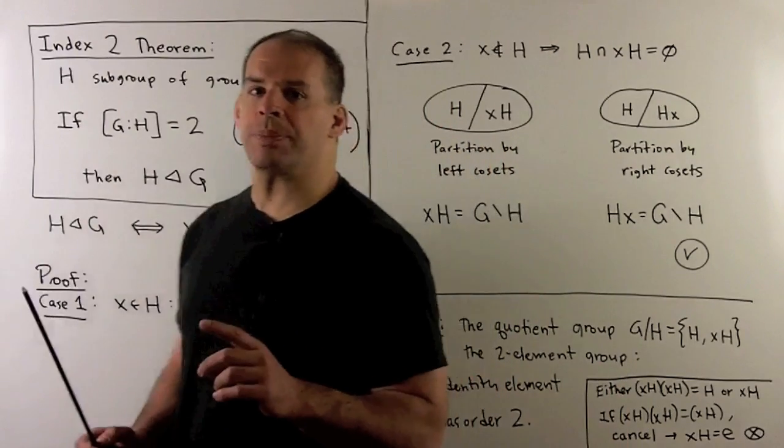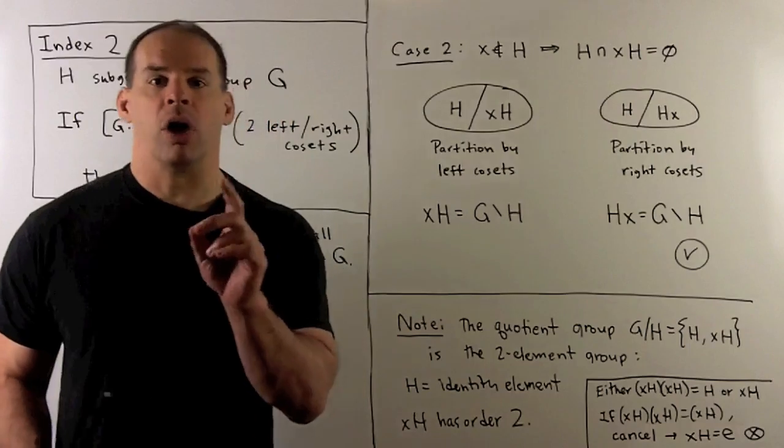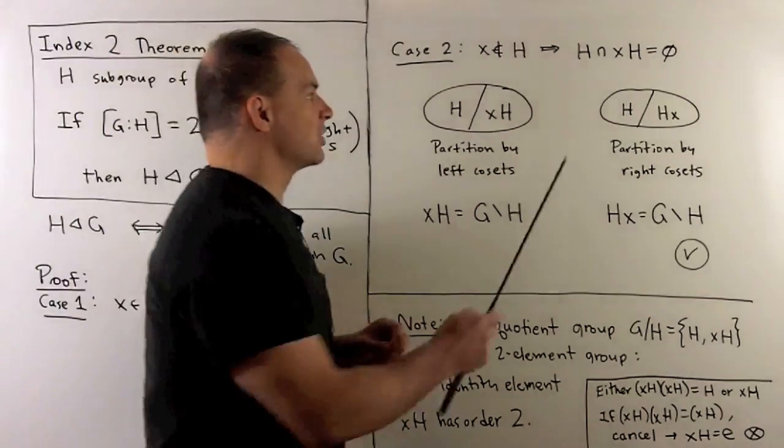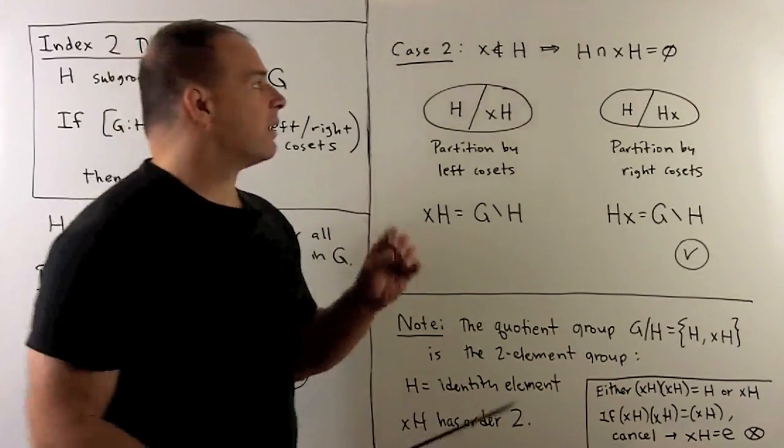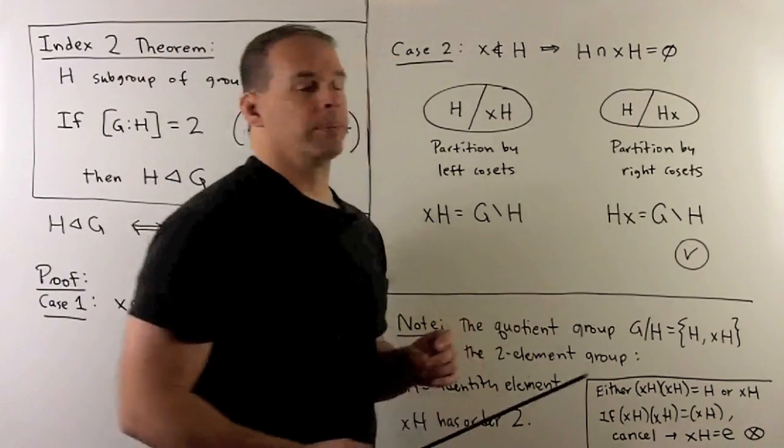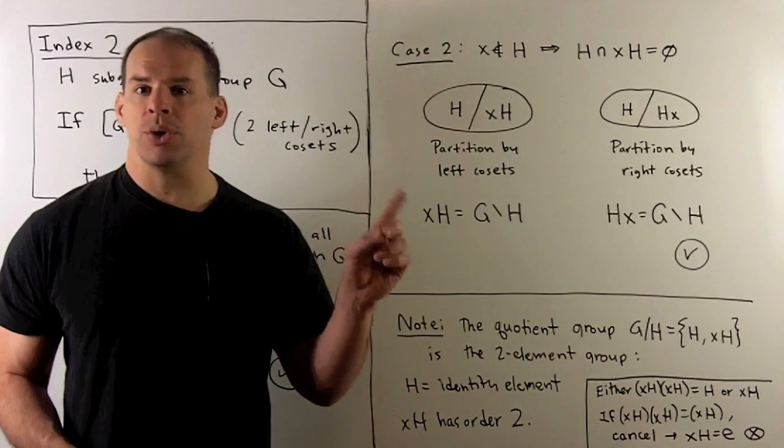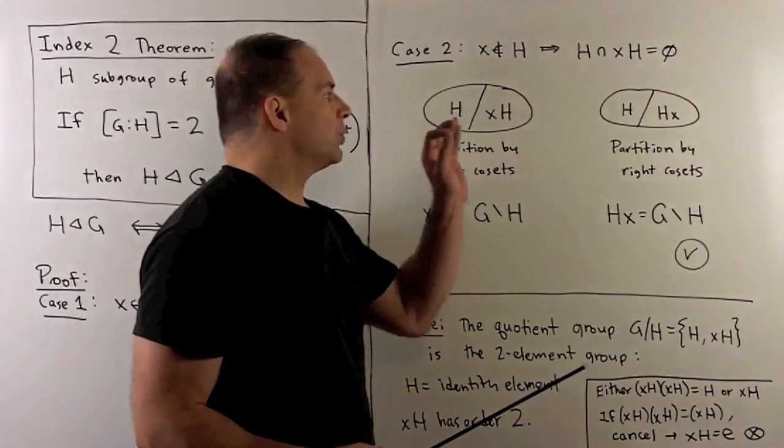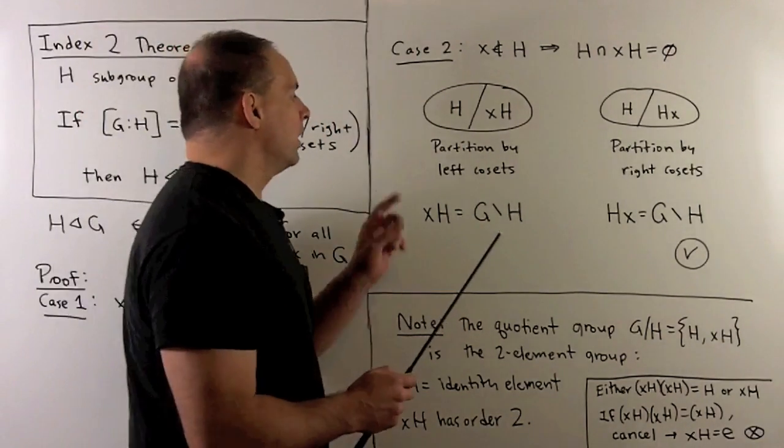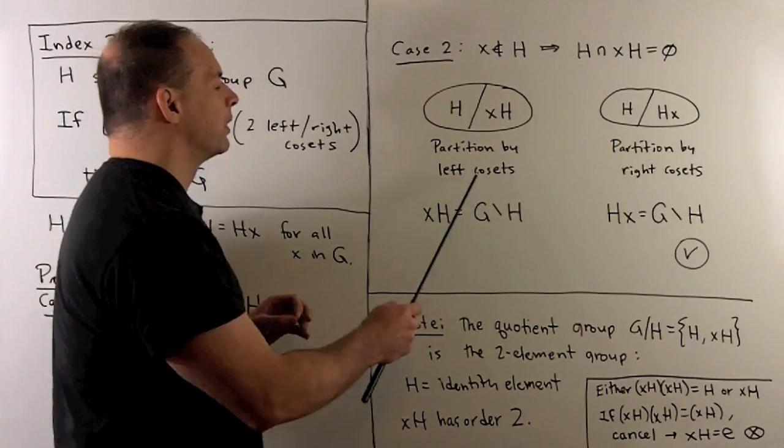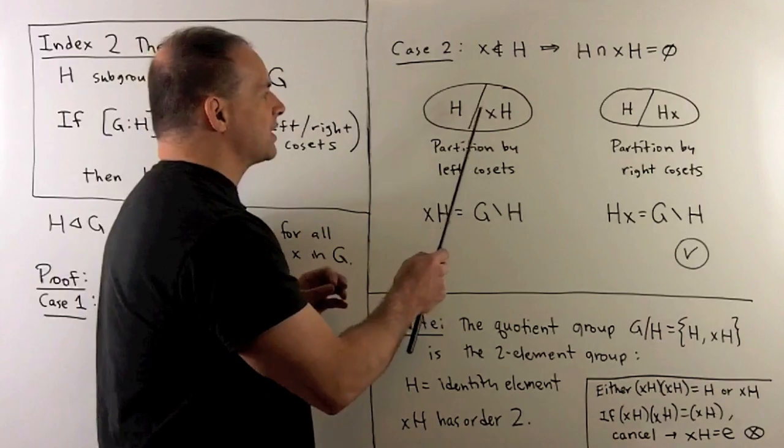For the second case, we have that X is not in H. Recall, H itself is a coset, in this case a left coset, if we let X be equal to the identity. So here we have two cosets, one contains an element that's not in the other, so these two cosets are disjoint. We only have two cosets, so there's only two partitions to consider. If we partition by left cosets, we have H and then everything that's not in H, which is XH.